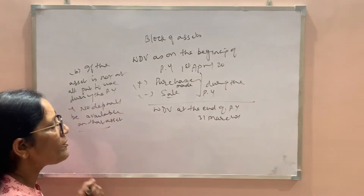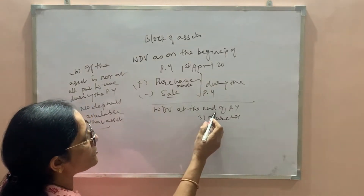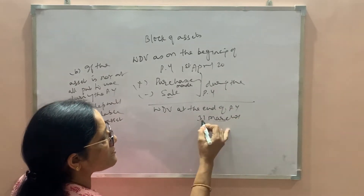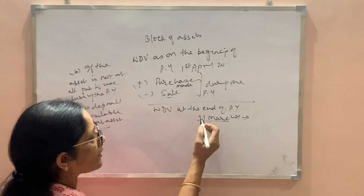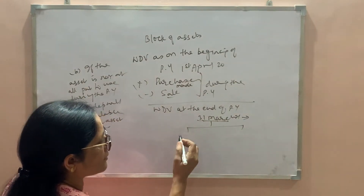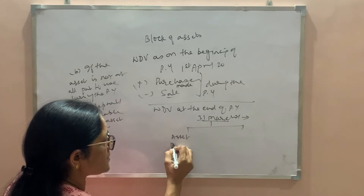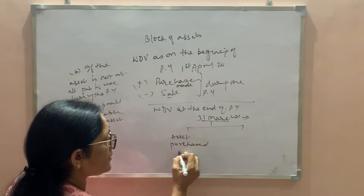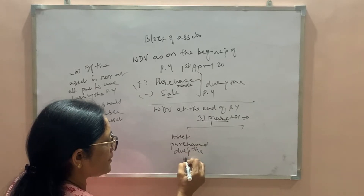So how do we calculate? When we get the WDV at the end of the previous year, we calculate depreciation on this value. This value is divided into two parts: first, the assets purchased during the year, and second, the original assets which were already in the block and used during the year.